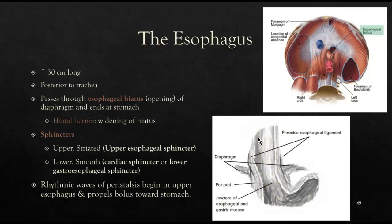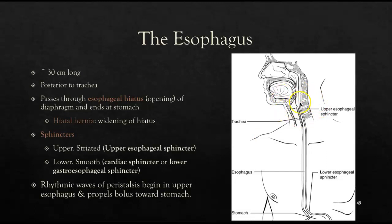The esophagus has two sphincters. The upper esophageal sphincter is made up of striated muscle. The lower esophageal sphincter — also known as the cardiac sphincter or gastroesophageal sphincter — is made up of smooth muscle and is therefore involuntary. Peristalsis moves the bolus down through the esophagus and eventually allows it to move into the stomach.